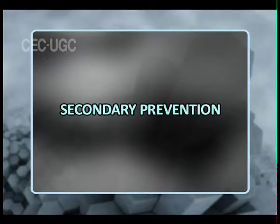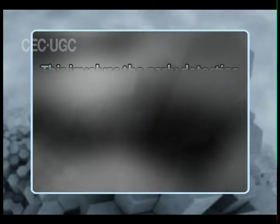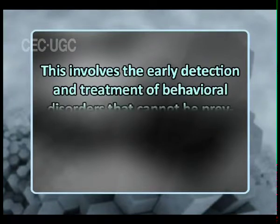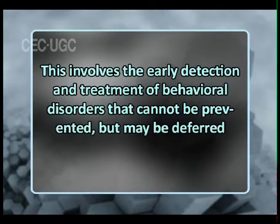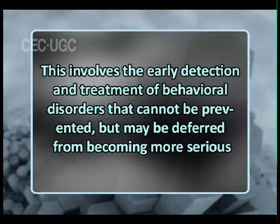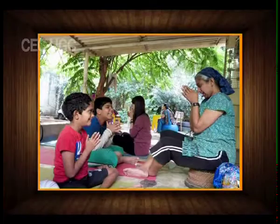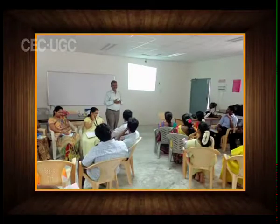Now, secondary prevention: this involves the early detection and treatment of behavioral disorders that cannot be prevented but may be deferred from becoming more serious. Secondary prevention depends first upon discovering maladjustment before an individual's behavior has deteriorated too seriously. Through the efforts of various official and volunteer agencies, campaigns of public education are being conducted to acquaint people with the nature and symptoms of mental illness, so that they will seek treatment when it is needed.